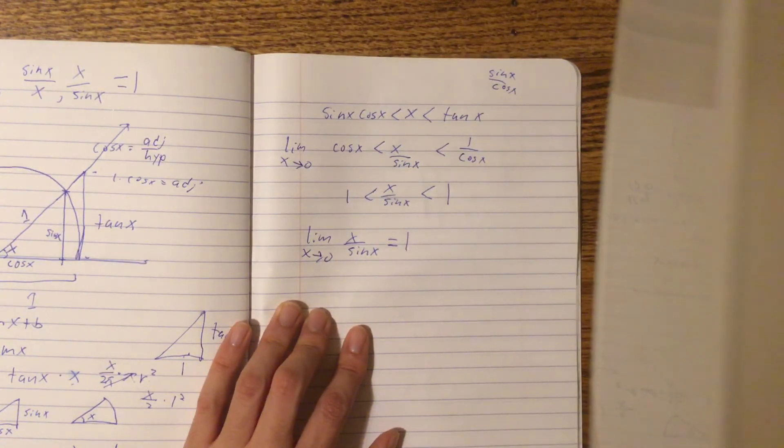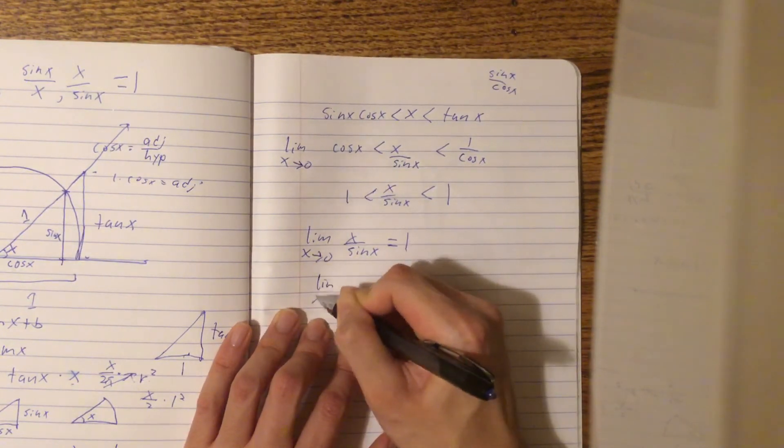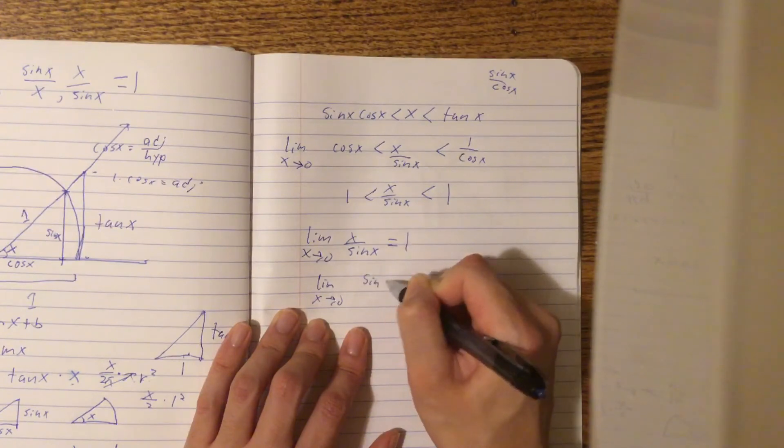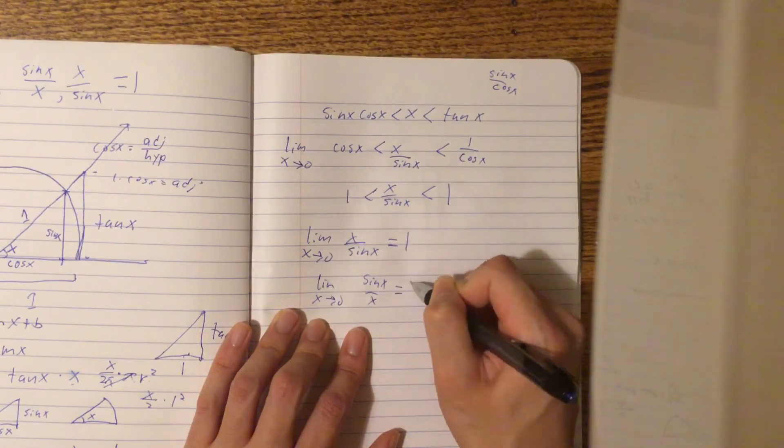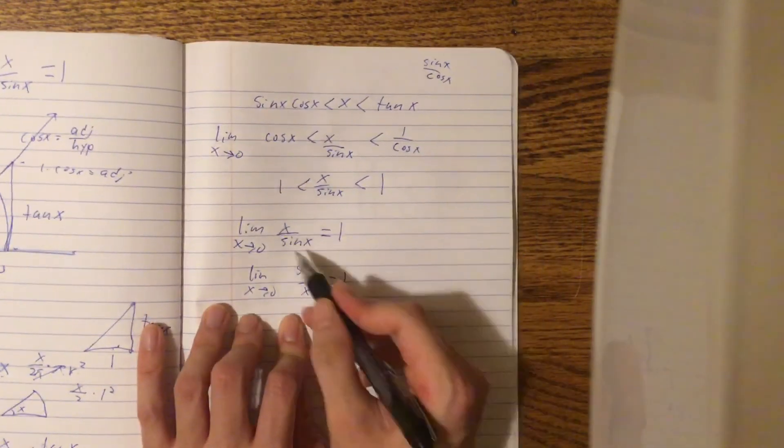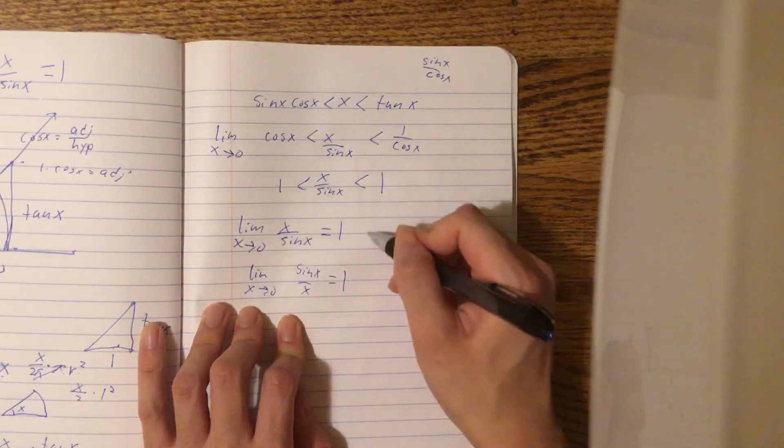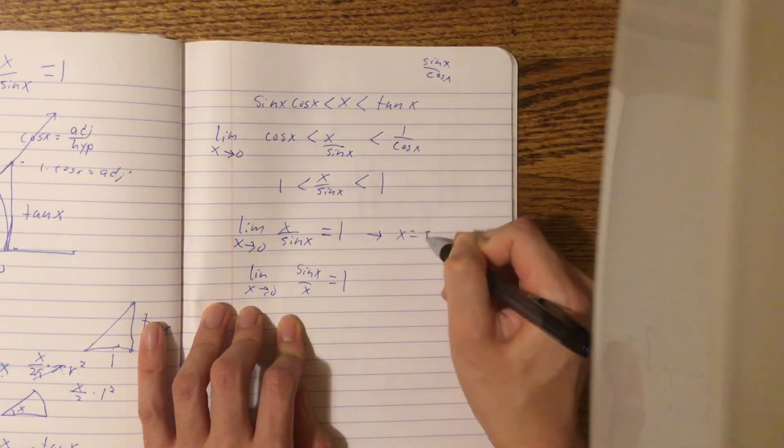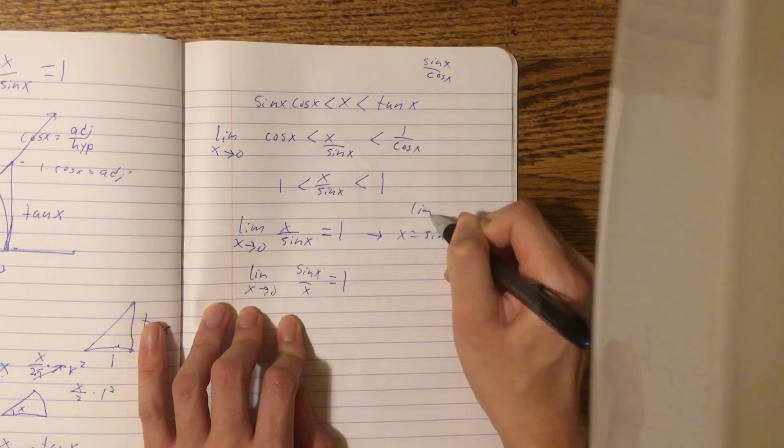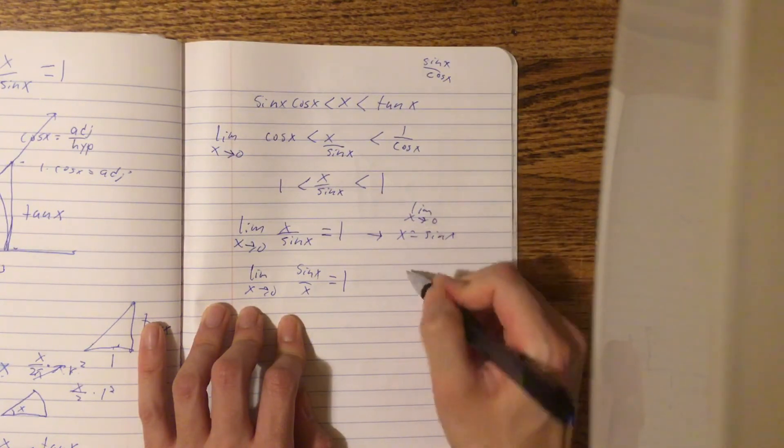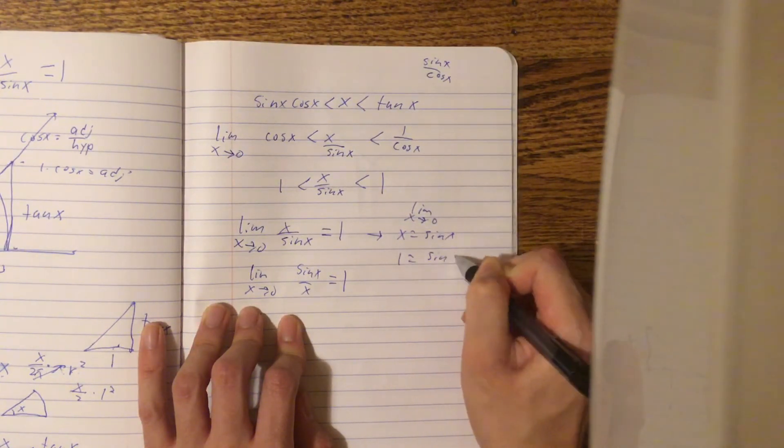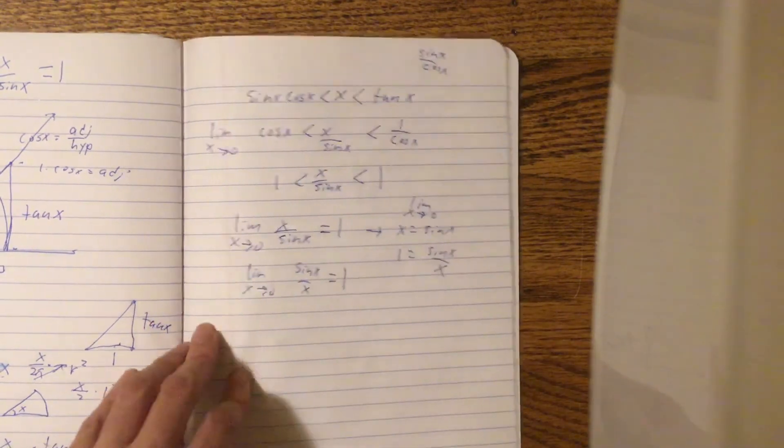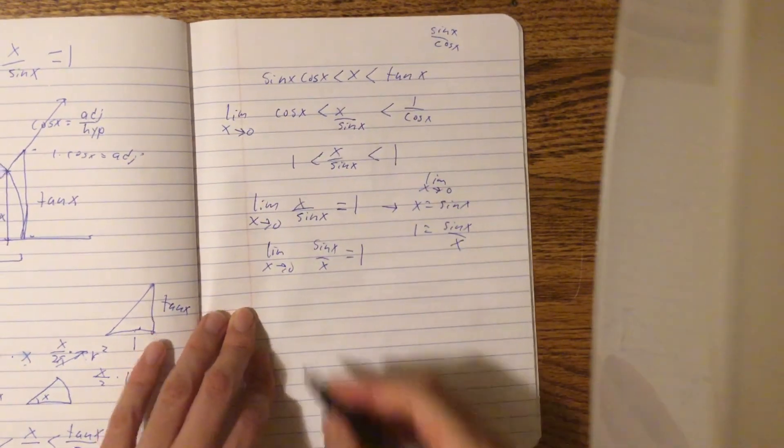Now, if this is true, then the limit as x approaches 0 of sine x over x must also equal 1. Because we can just rearrange this formula here. We get x equals sine x as a limit x approaches 0, and that 1 equals sine x over x. Now, on to proving the next.